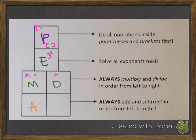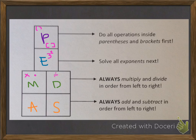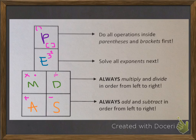Finally, we're going to solve the addition and subtraction. Just like with multiplication and division, we're looking for both at the same time and we add and subtract in order from left to right. So if there's a subtraction symbol before an addition symbol in the problem, that means we subtract first. Now we've got this all filled out — it's colorful, it's got symbols and letters — and that's going to help us remember what to do when we get to the actual problems.